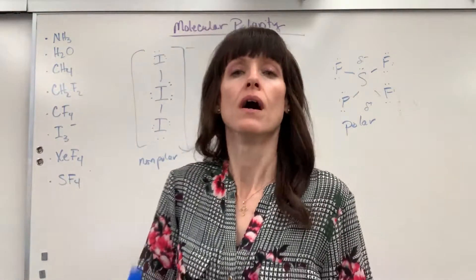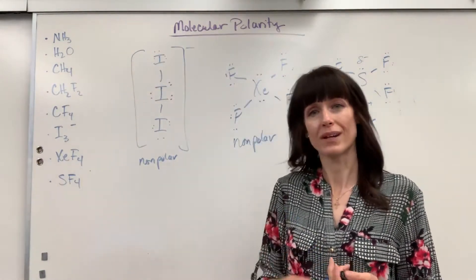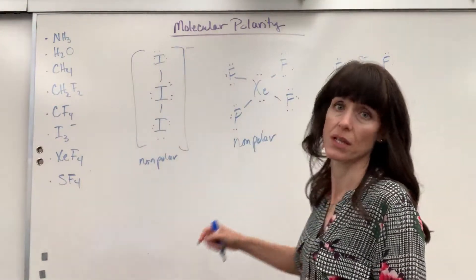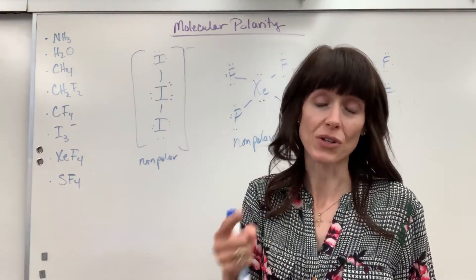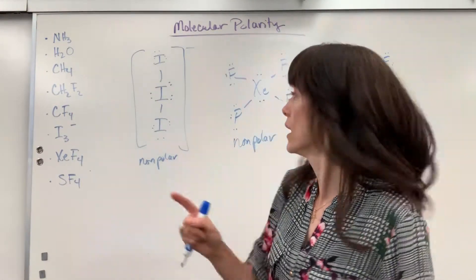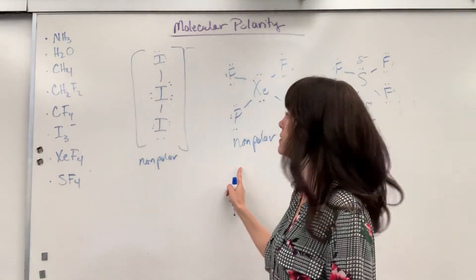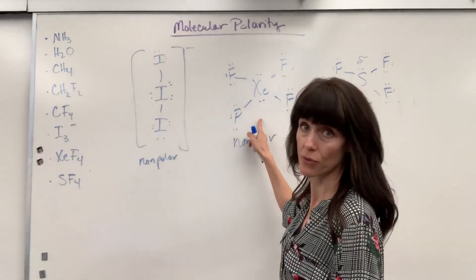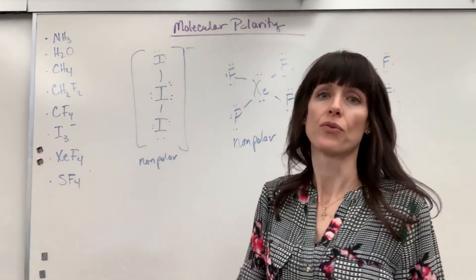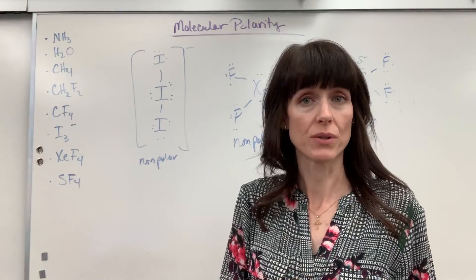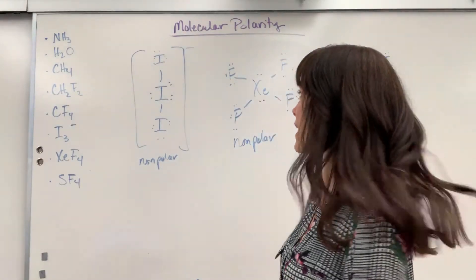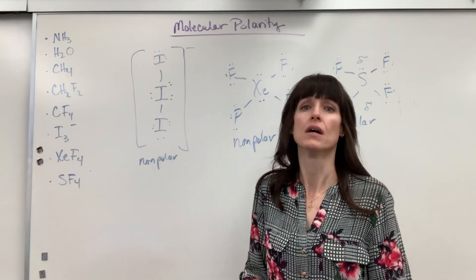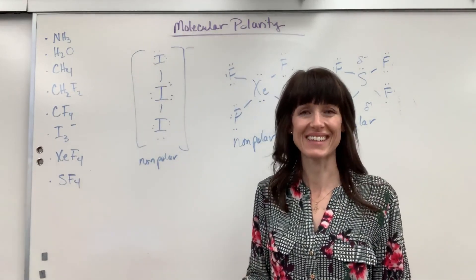So there you have it on polarity of molecules. You're really looking for two things after you write the Lewis dot structures. Number one: does the central atom have lone pairs? The only two exceptions are linear from trigonal bipyramidal and square planar from octahedral. Number two: is it symmetrical? If you need more practice, I have another video on practice. If you need to review polarity of bonds, go check that out. Good work, thanks!